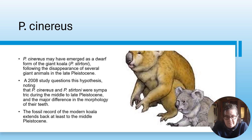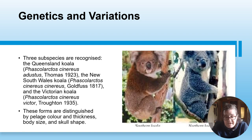Phascolarctos cinereus may have emerged as a dwarfed form of the giant koala following the disappearance of several large animals in the late Pleistocene. A 2008 study questioned this hypothesis based on major differences in tooth morphology. The fossil record of the modern koala extends back to at least the middle Pleistocene.